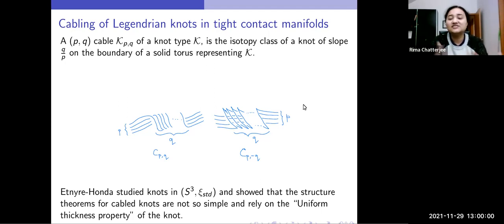A knot satisfies uniform thickness property if you take a tubular neighborhood of the knot and if we can thicken that neighborhood to the maximal tubular neighborhood. I know this is a very vague definition, but I do not really want to go into the details.